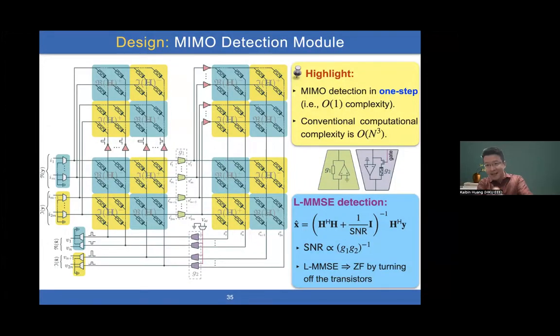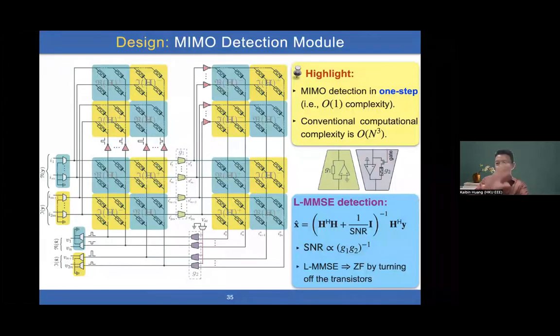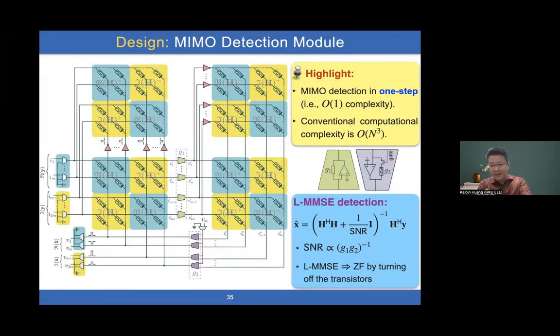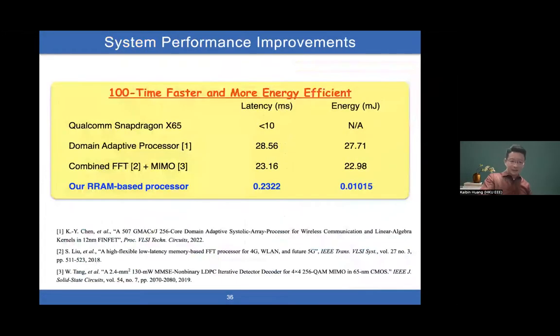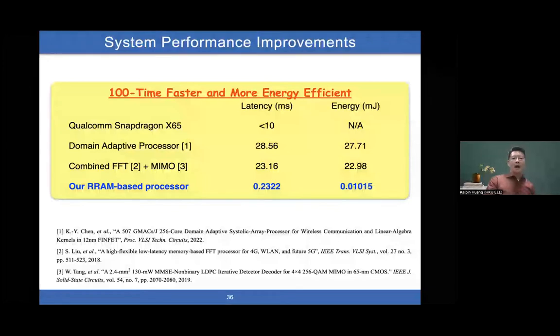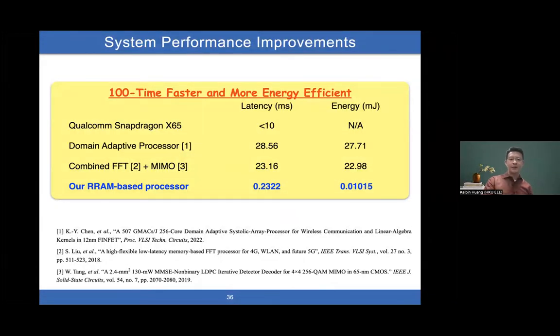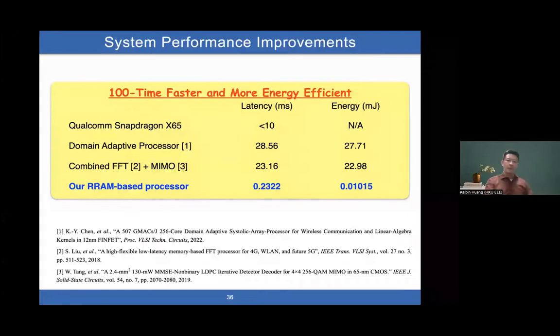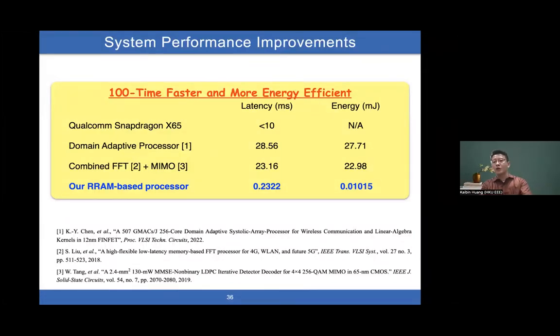Our contribution here is to really use it for complex MIMO detector modules. This is complex matrix inversion. What's new? Actually, you have transistors. You see the G1 there—G1 and G2 there. This one can do mode switching. You can switch from zero forcing to MMSE by turning on and off the one-over-SNR term inside the pseudo-inverse module. All right. So this is amazing, right? We can do very flexible computations. Why do we want to do this? We also did some comparison with state-of-the-art processor communication processors, including Qualcomm Snapdragon, domain-adaptive processor combining FFT and MIMO, and the latest digital processor. In general, in terms of latency, we can reduce latency by 10 times and also reduce energy dramatically because of low power consumption.